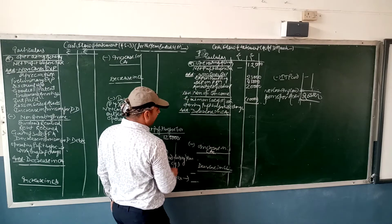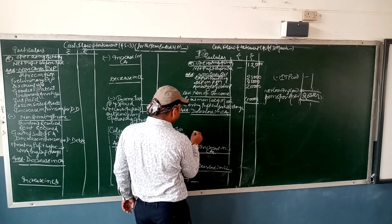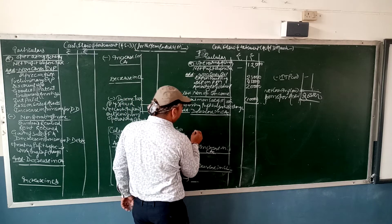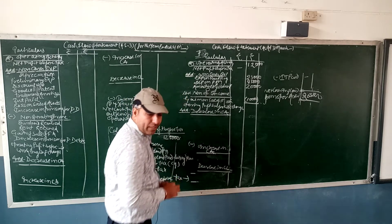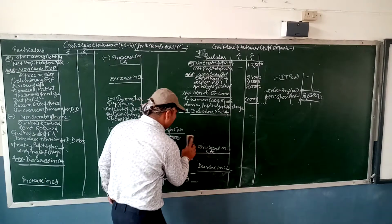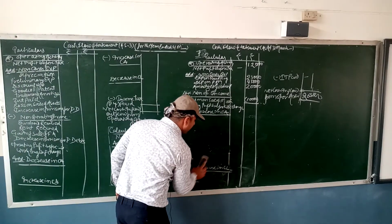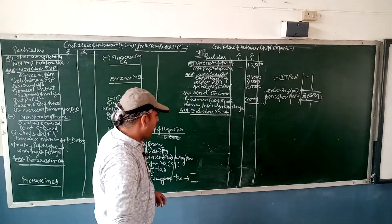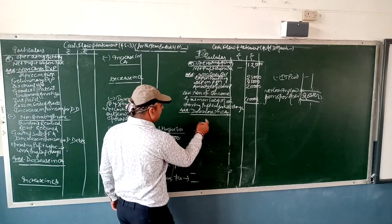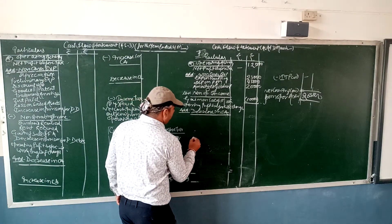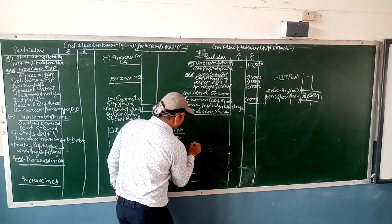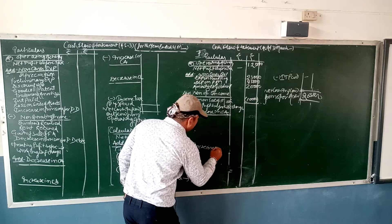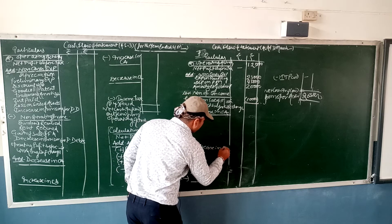Add decrease in current assets and increase in current liabilities. Just the opposite: increase in current assets and decrease in current liabilities are minus. So decrease in CA goes to plus side, increase in CA goes to minus side.